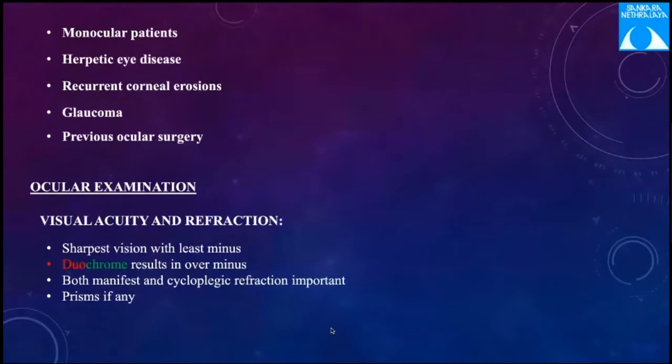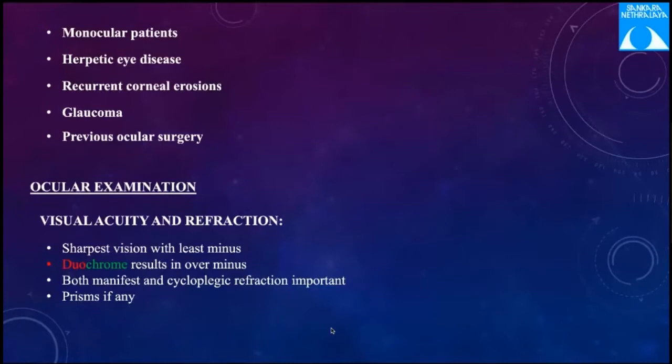For ocular examination, visual acuity and refraction — the sharpest vision with the least minus should be the endpoint, and duochrome should not be used as it results in an over-minus. Both manifest and cycloplegic refraction are important. Manifest refraction gives more accuracy in determining the axis and amount of cylinder, while cycloplegic refraction is for refining the sphere. A great difference between the two indicates either an over-minused myope or substantial latent hyperopia.